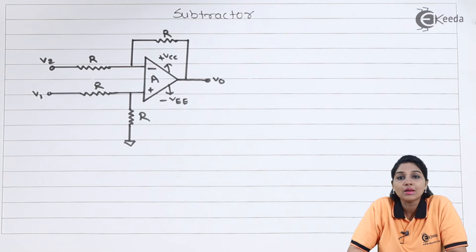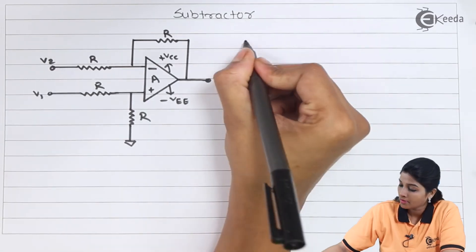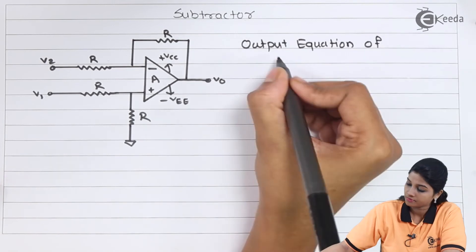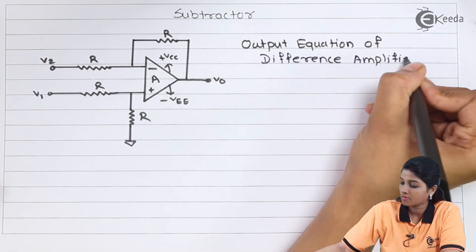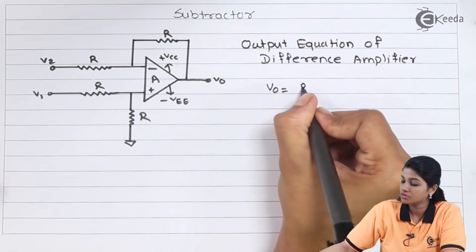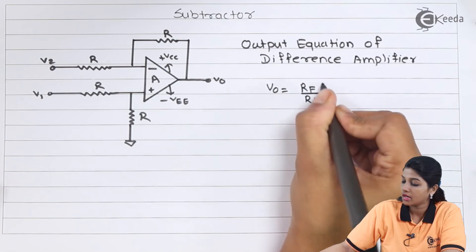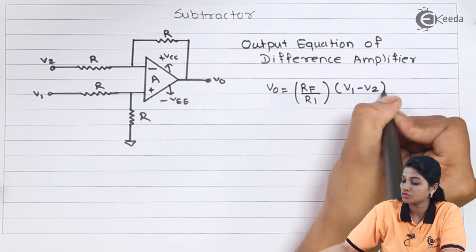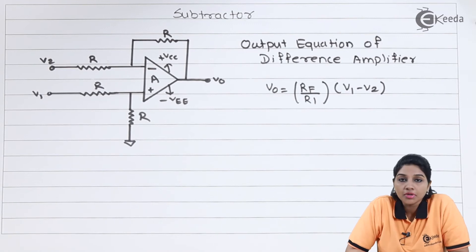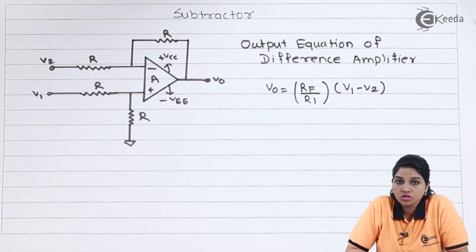In case of difference amplifier, the output equation can be given as V0 equals RF by R1 times V1 minus V2. This equation is obtained by using superposition theorem applied at both the input terminals of the op-amp.